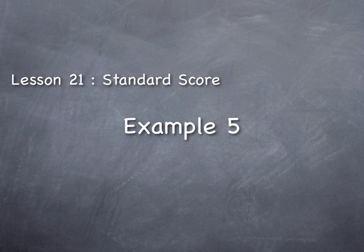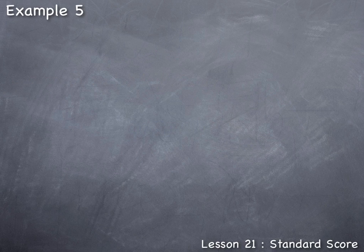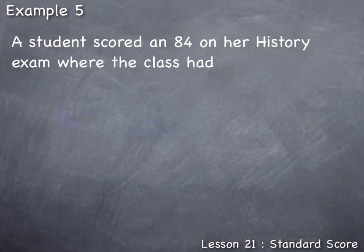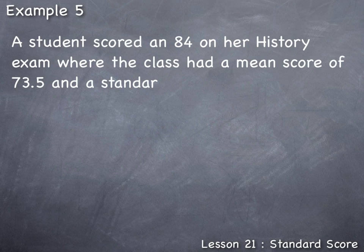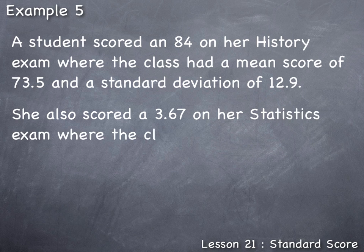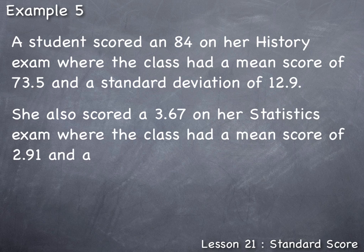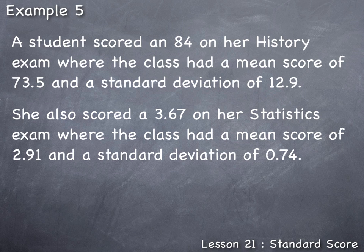Lesson 21, standard score example 5. A student scored an 84 on her history exam where the class had a mean score of 73.5 and a standard deviation of 12.9. She also scored a 3.67 on her statistics exam where the class had a mean score of 2.91 and a standard deviation of 0.74.